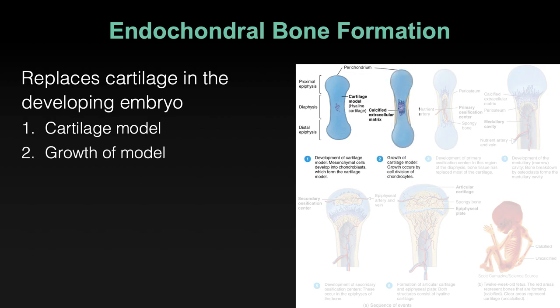That model will grow as the embryo grows. It will lengthen, become more of a cylinder, and start to get the irregularity and shape that distinguishes it from other bones. In the case of the humerus — the upper arm bone — it elongates and is generally a pretty easy cylinder to interpret.